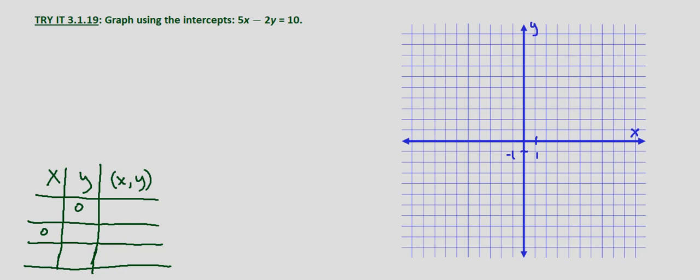So let's start off with the x-intercept. So again this is when y equals zero. So 5x minus 2 times zero equals 10. That gives us 5x equals 10. Divide both sides by 5 and we get x equals 2. So our x-intercept is 2, 0.